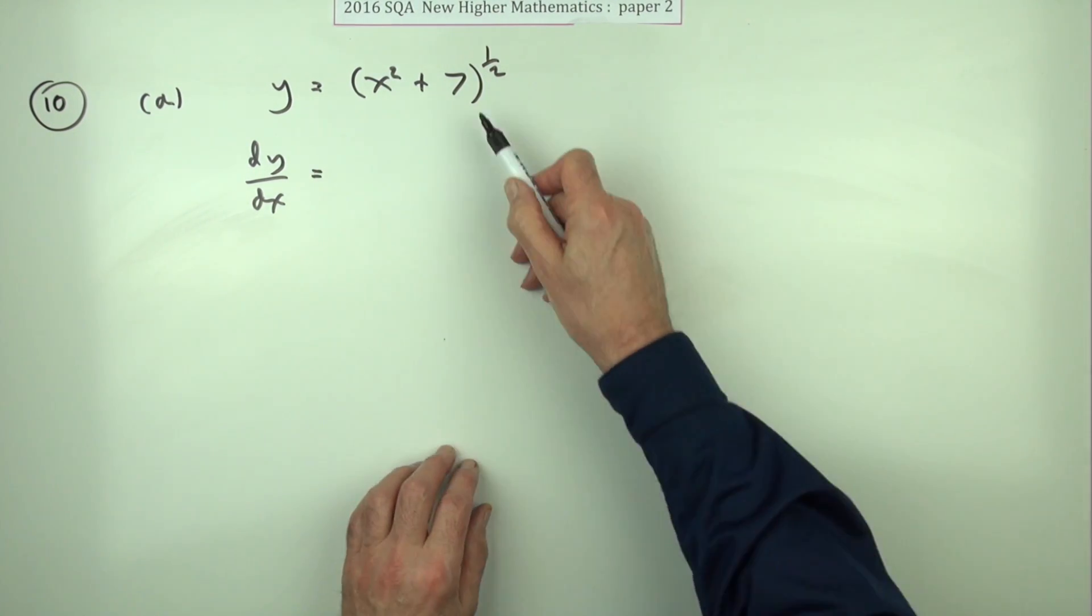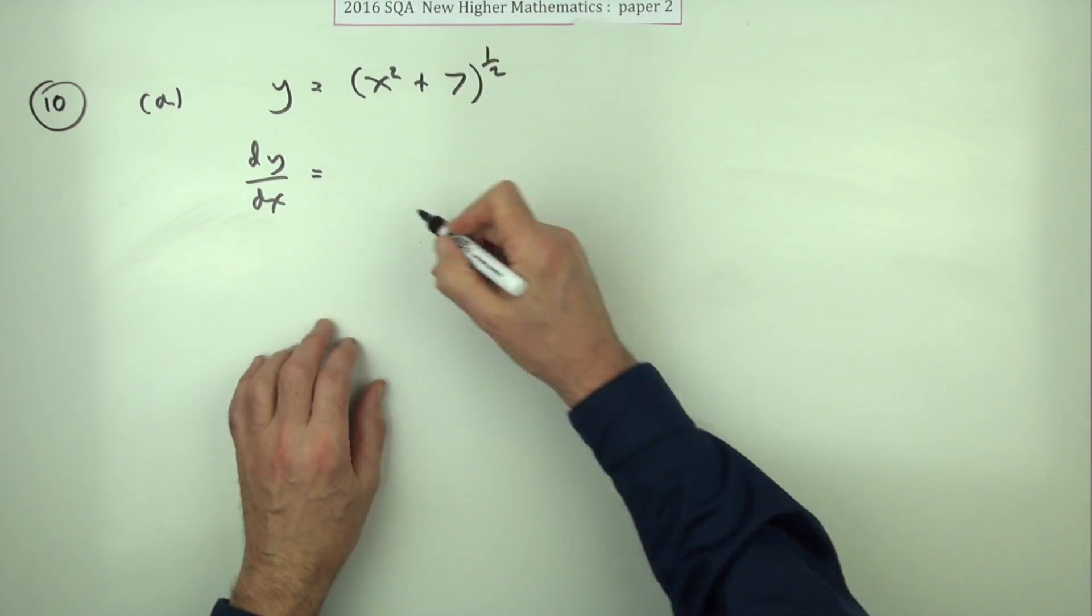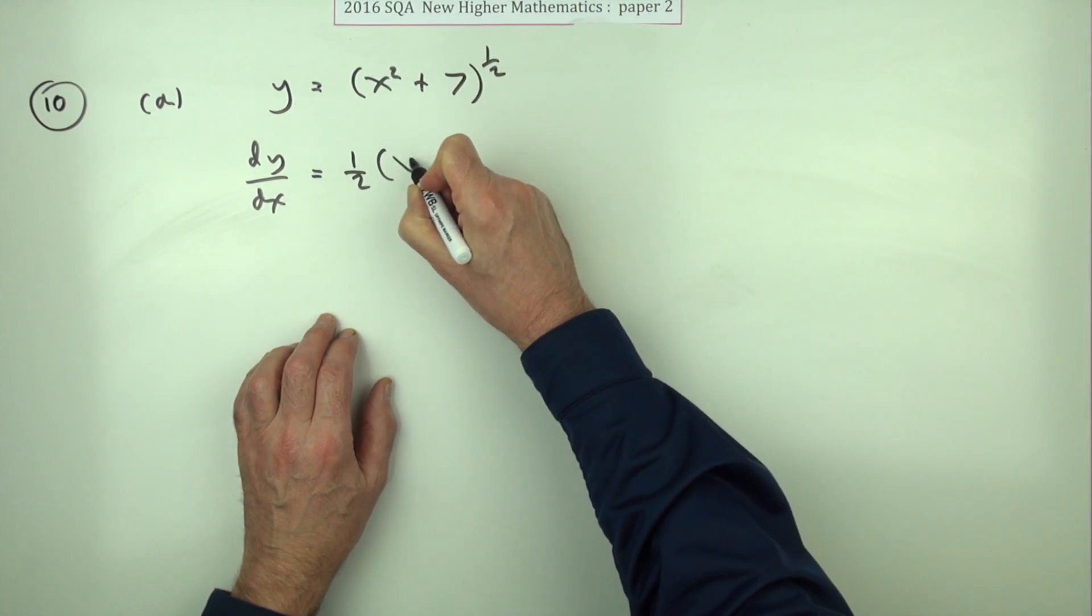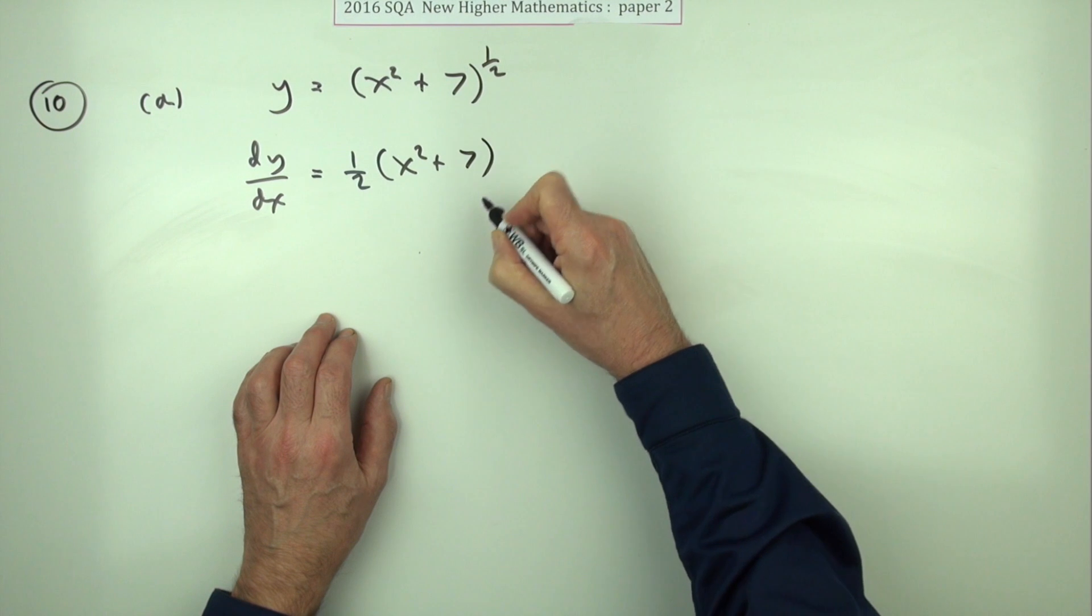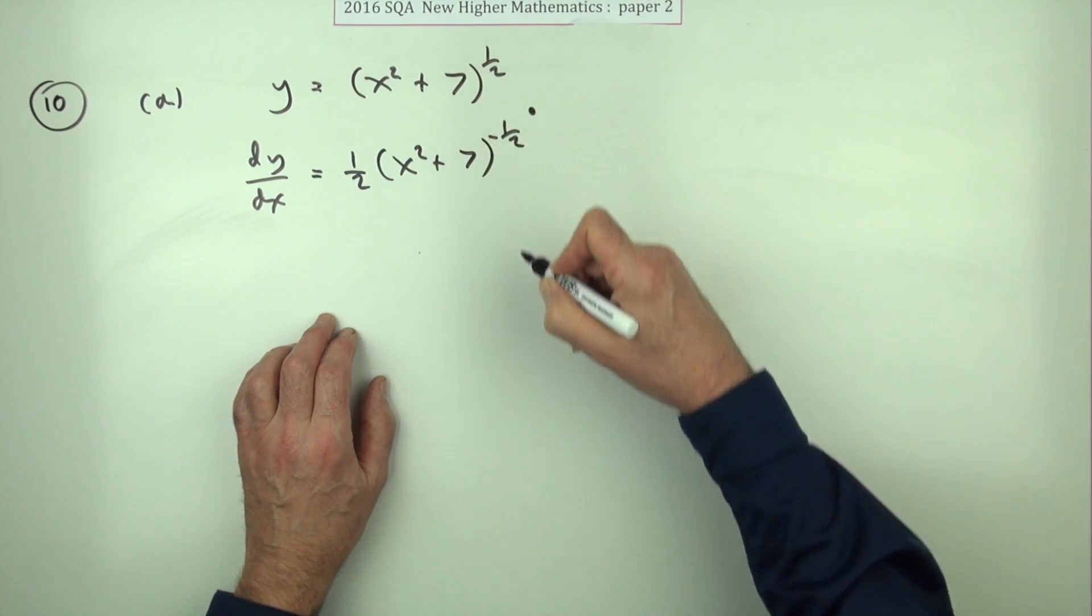The pattern's really straightforward. You take the outer function first, power a half, multiply by the power to one of the power. That'll be a half of whatever it's acting on to the power negative a half. Now doing that gets the first mark.